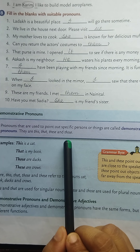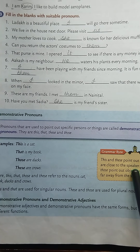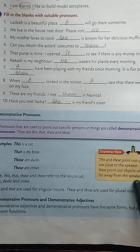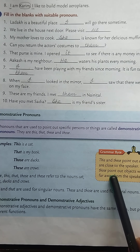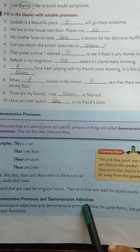This and that are used for singular nouns. These and those are used for plural nouns. This and these point out objects that are close to the speaker. That and those point out objects that are far away from the speaker.